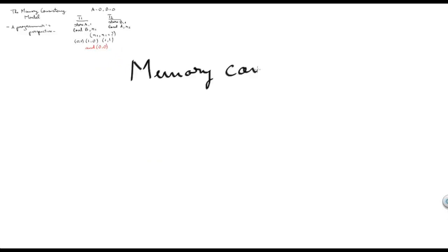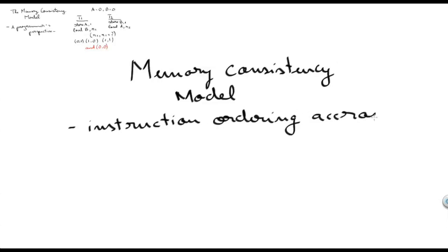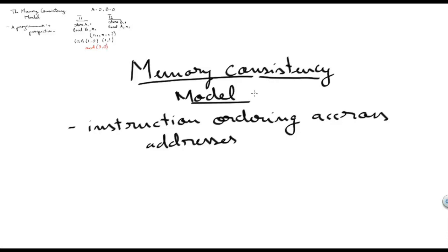To better understand why these reorderings are possible, we need to look at the memory consistency model. The memory consistency model basically describes the instruction ordering across addresses that the processor may do. It is important to note that the memory consistency model concerns instructions dealing with different addresses. Instructions dealing with the same address are covered by the cache coherence protocol. An important point is that whatever optimizations the processor will do, it will do with disregard to concurrency. The processor is not aware if your application is single-threaded or multi-threaded — it will optimize your program while only trying to ensure single-threaded correctness.